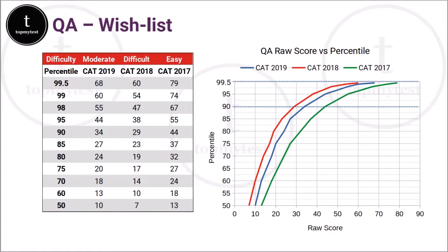If you look at the statistics for CAT 2019, a score of 67 would give you only a 98 percentile, whereas the same score would give you a 99.5 percentile in CAT 2018. Similarly, scores in CAT 2018, which was a pretty difficult paper, are roughly five to seven marks lesser than the moderate paper for the same percentile category. As you rise higher in the percentile levels, the amount you need to score extra to gain that extra percentile point becomes more and more.